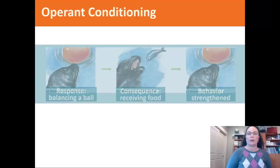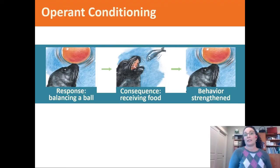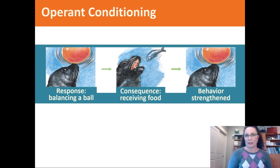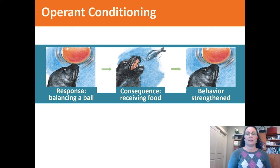I'm back, and it's time to talk about operant conditioning. Here's a nice little depiction of the process of operant conditioning. We have a seal who is exhibiting a behavior of balancing the ball on its nose, and it gets rewarded with that fish. That's the consequence of its behavior — it gets a fish.